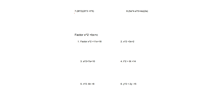For number 7, we have 8t squared times 2t cubed plus t to the power of 5. So here we're going to distribute. It's going to be 8t squared times 2t cubed, which is just 16 times t to the power of 5. And then plus 8t squared times t to the power of 5, which is just 8t to the power of 7. So this is your answer for number 7.